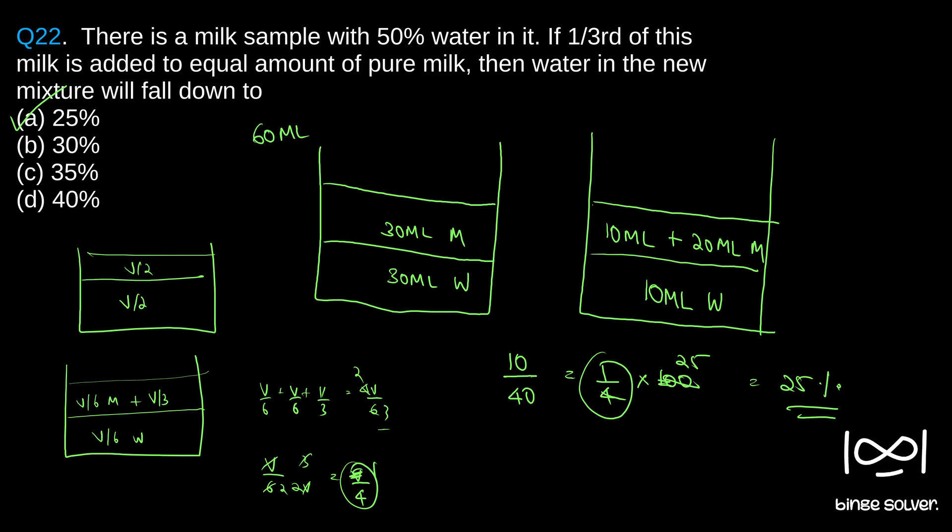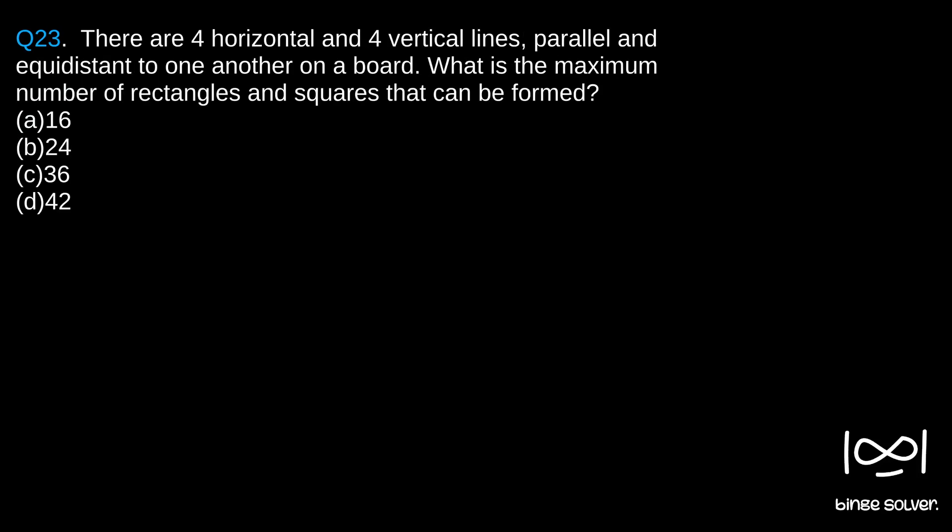Next question, question 23. There are four horizontal and four vertical lines, parallel and equidistant to one another on a board. What is the maximum number of rectangles and squares that can be formed? So there are four lines.